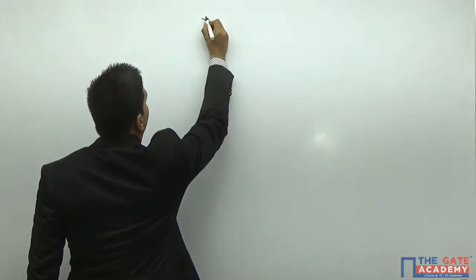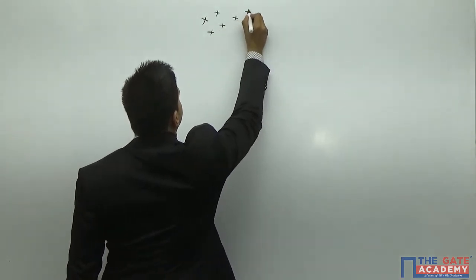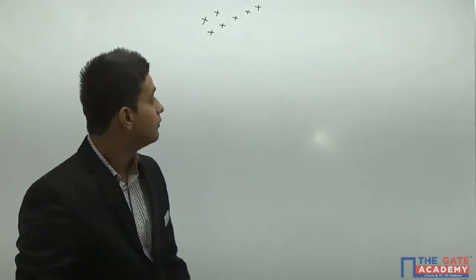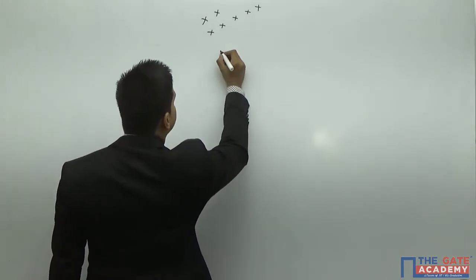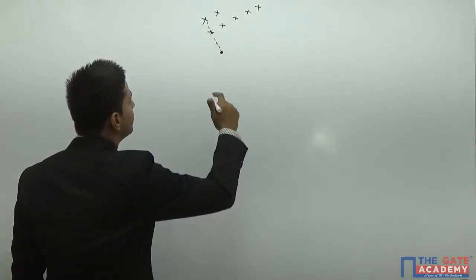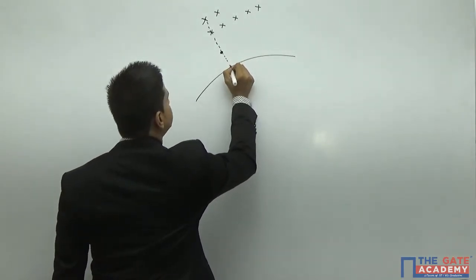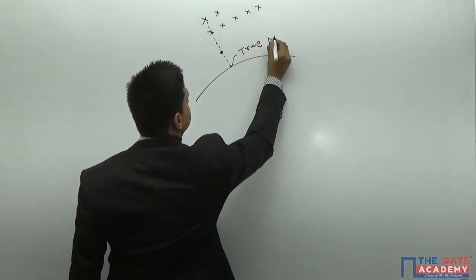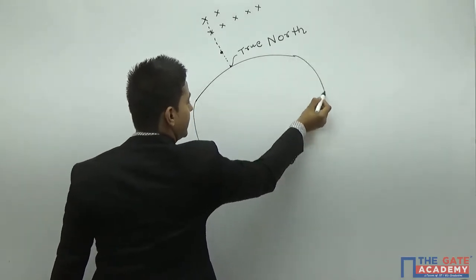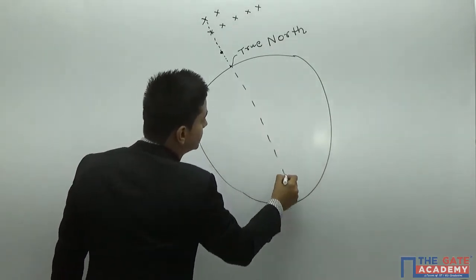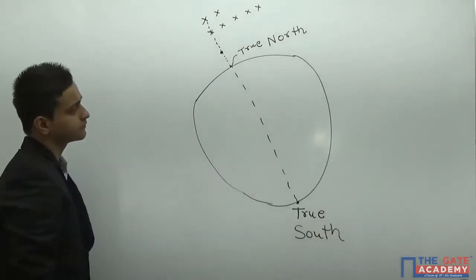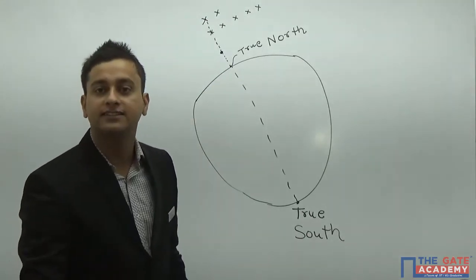We all know that we have a constellation which contains seven stars. We also have a pole star, which is the brightest star in the universe. If the pole star comes directly in a straight line with any two stars of the constellation, and we project that line on the earth's surface, this becomes our true north. Projecting the line to the bottom of the earth gives us true south. This line is called the true meridian.